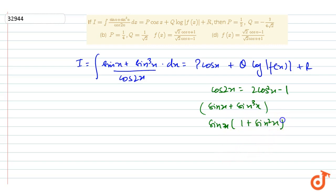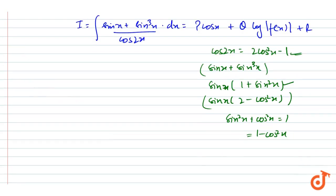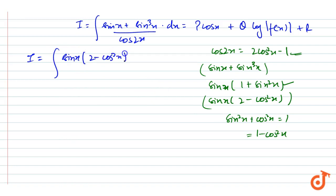We can write sine squared x using the identity sine squared x plus cos squared x equals 1, so sine squared x equals 1 minus cos squared x. Putting this value in, the numerator becomes sine x into (2 minus cos squared x). We replace the numerator by this and the denominator by 2 cos squared x minus 1, giving us the new form of I.